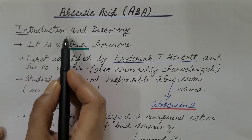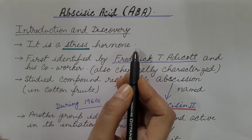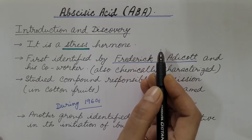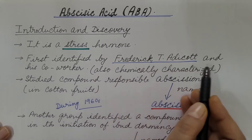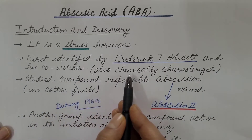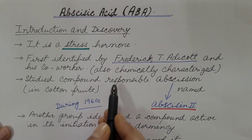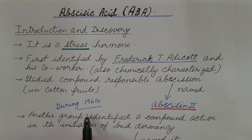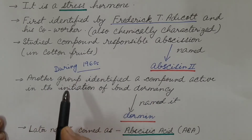First, introduction and discovery. Abscisic acid is a stress hormone. It helps plants to survive during unfavorable environmental conditions like deficiency of water, high temperature, and other unfavorable conditions. It was first identified by Frederick T. Adicott and his co-workers, who also chemically characterized it. They studied a compound in cotton fruits that was responsible for abscission and named it abscisin II. Abscission is the natural detachment of parts of a plant, typically dead leaves and ripe fruits. This was during the 1960s.